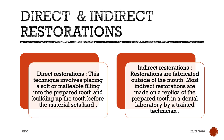Indirect restorations involve two sittings: first we do the preparation, then we take an impression, send it to the laboratory to get the restoration done, then the restoration comes back to the clinic and we lute it to the tooth surface — similar to a crown. You do the preparation first, take the impression, send it to the lab, then the lab work comes back, you check the high points and lute it. That is indirect restoration.